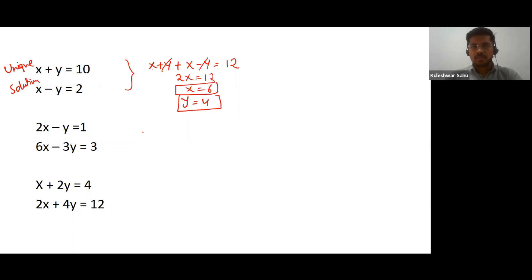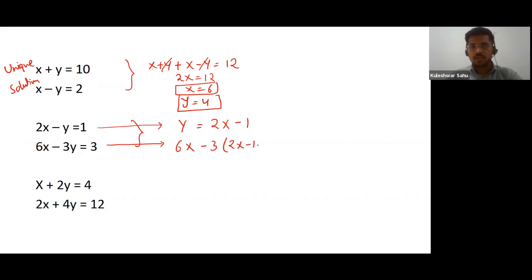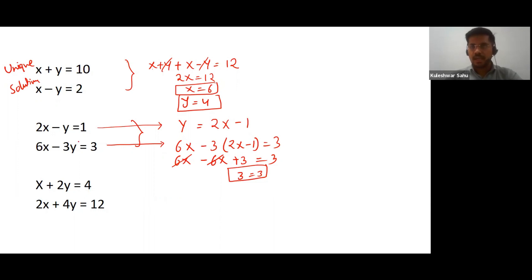For the second set of equations, instead of adding or subtracting, we use the substitution method. From equation one, we get y equals 2x minus 1. Substituting into the second equation: 6x minus 3(2x minus 1) equals 3. Opening the brackets: 6x minus 6x plus 3 equals 3. The x terms cancel and we get 3 equals 3, which is always true. This means the equation is true for any value of x and y — this pair of equations has infinite solutions.